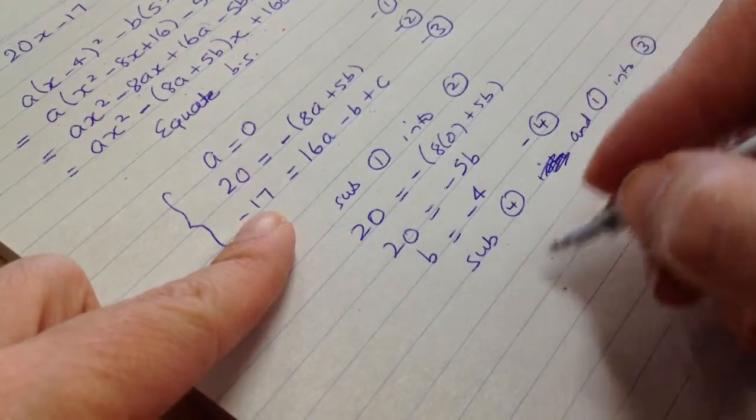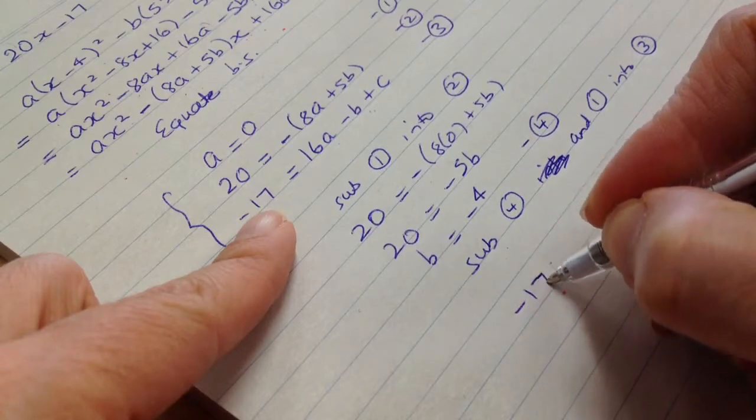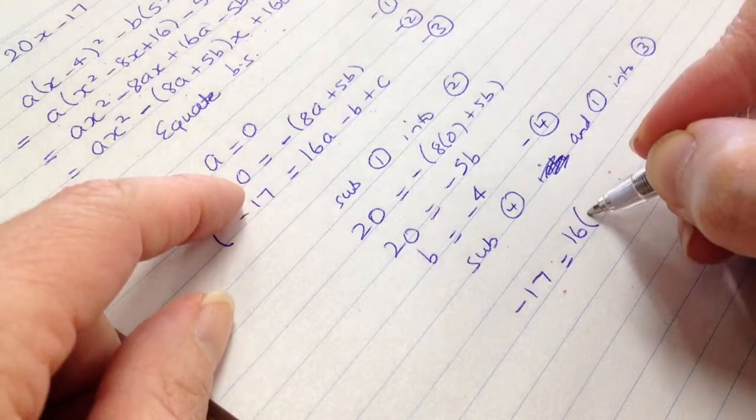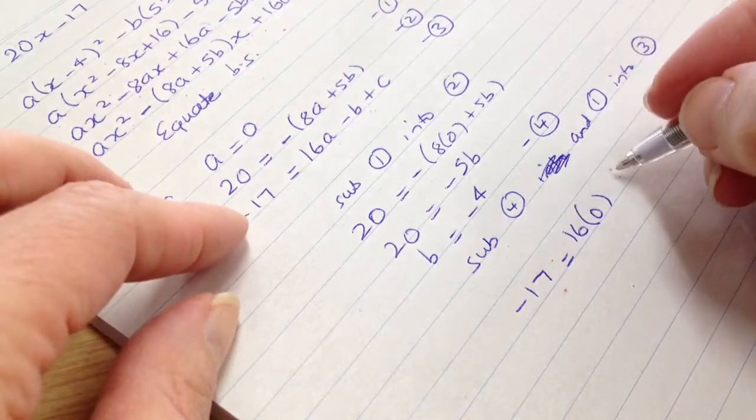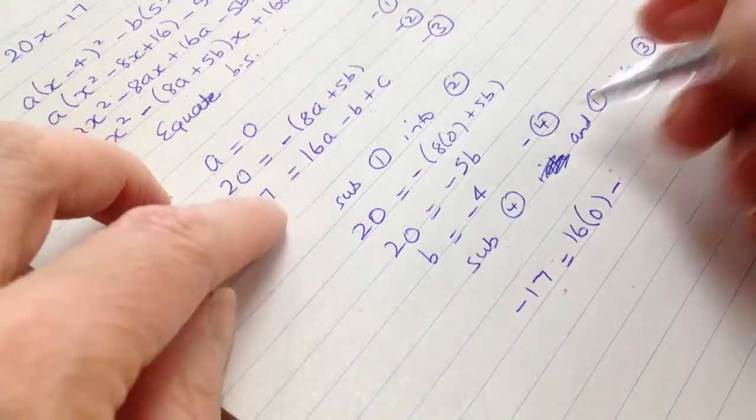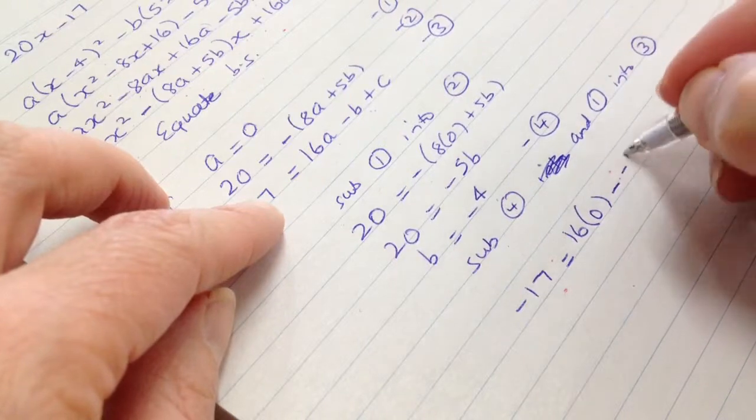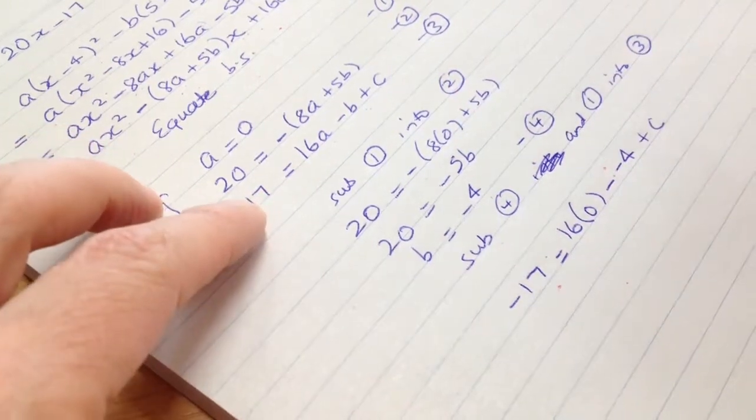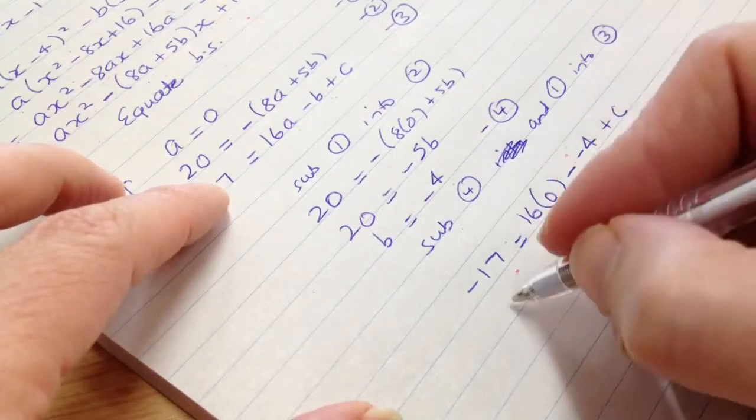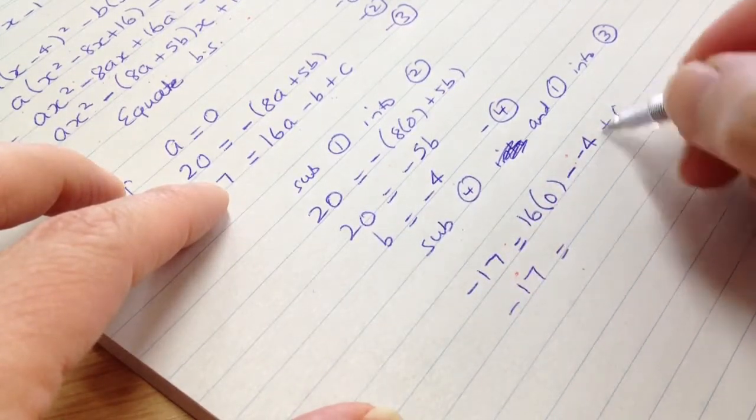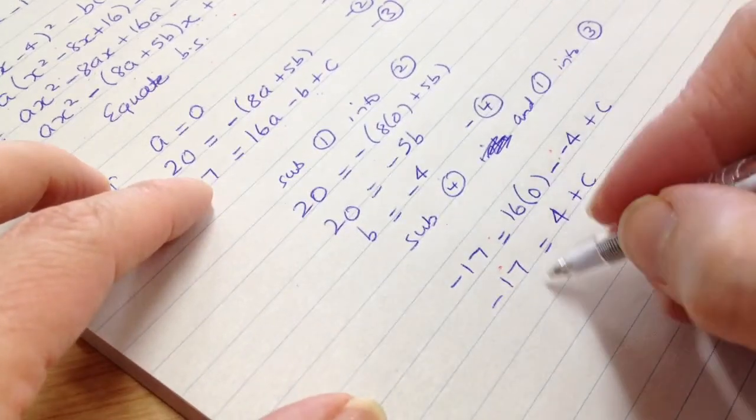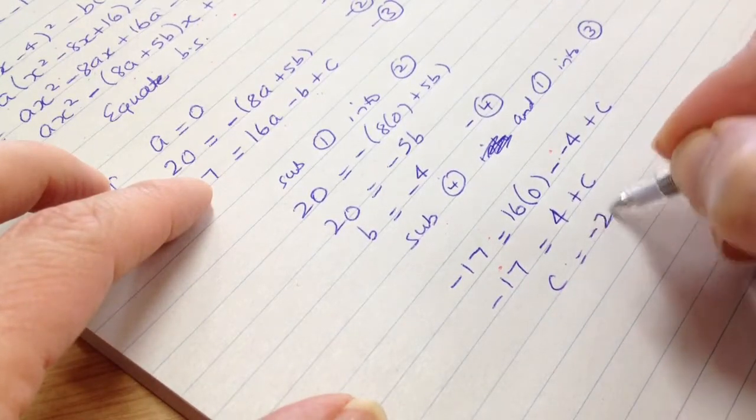Okay, so let's do that now. So we write minus 17 equals 16 times zero, which is a. Okay? Then minus b, which is 4, and then plus c. Okay? So let's clean that up. So minus 17 equals minus 4 plus c. Add 4 to both sides. So c is equal to minus 13.